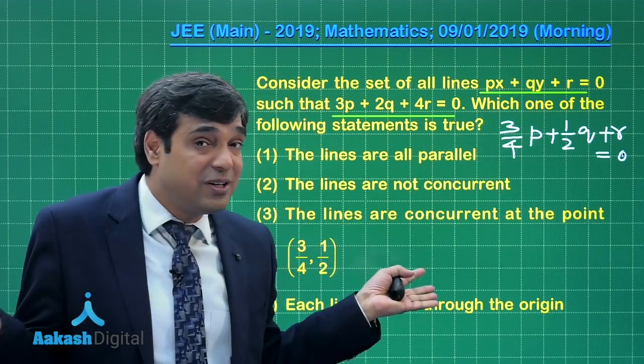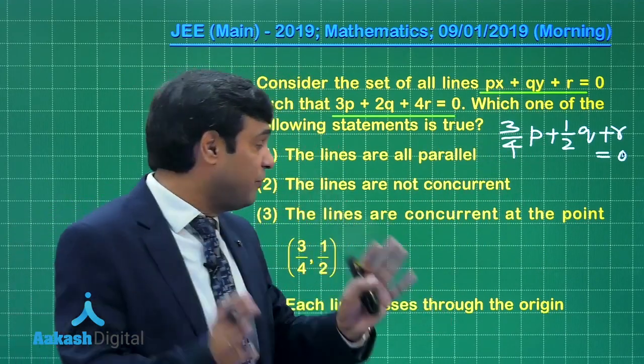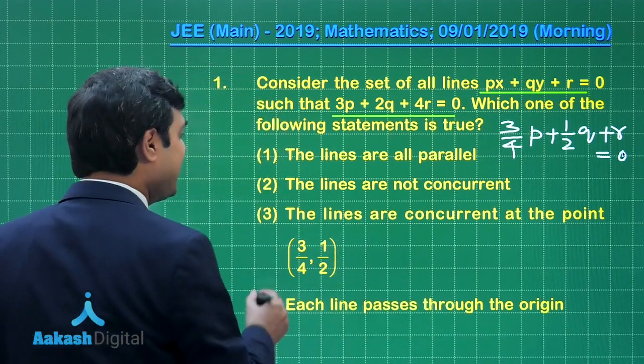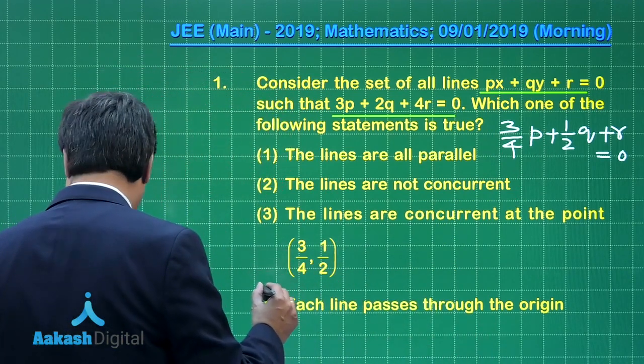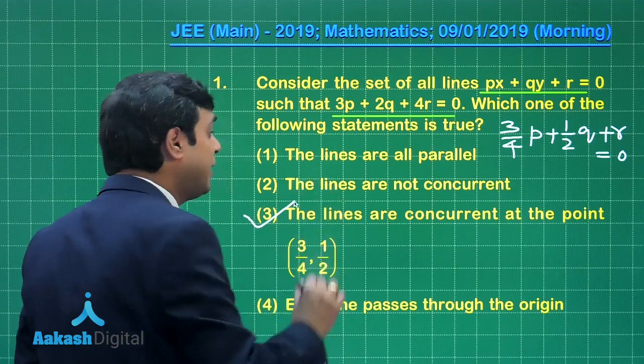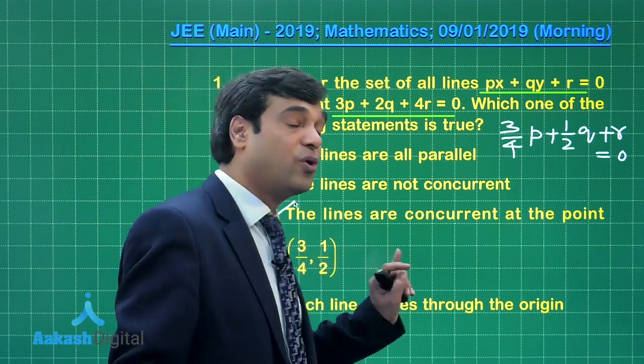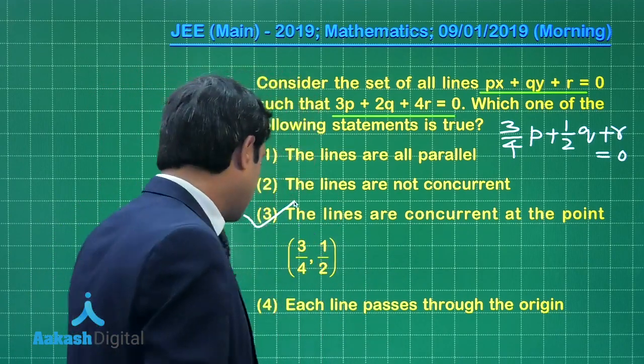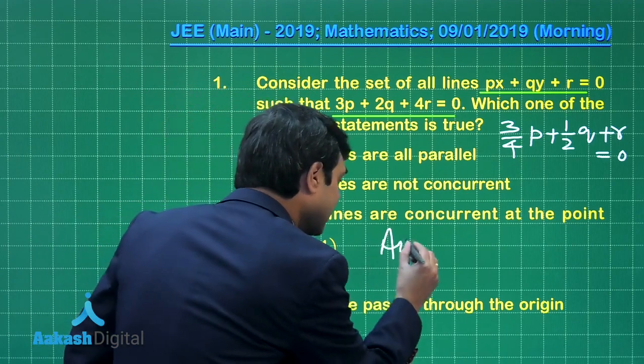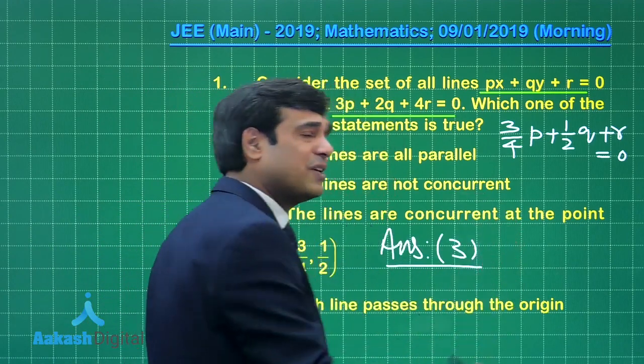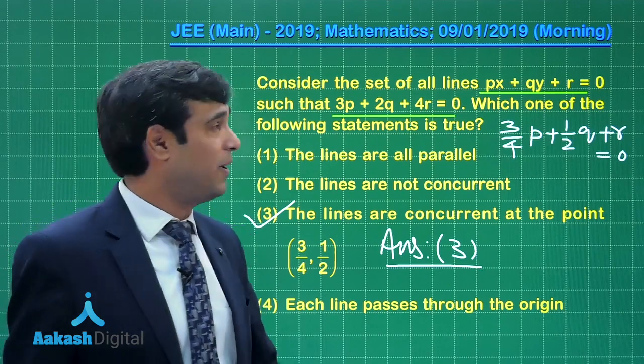What is the conclusion we are drawing? We are drawing the conclusion that the lines are concurrent at the point (3/4, 1/2). So the correct answer here is option number 3. Let us move on to the second question of this JEE Main paper.